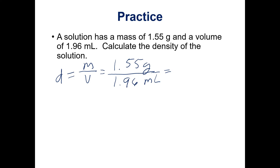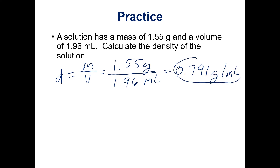If you divide 1.55 grams by 1.96 milliliters you should come up with 0.791 grams per milliliter. Remember we have to round to the correct number of significant figures — 1.55 has three significant figures and 1.96 has three significant figures, so our answer should have three significant figures.